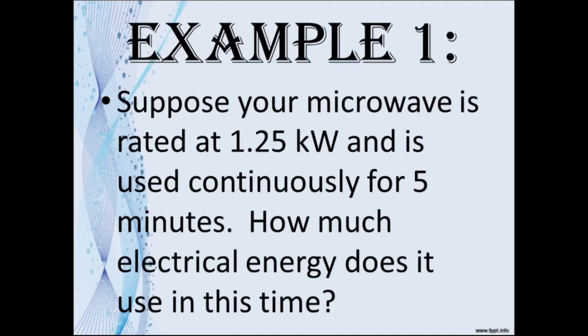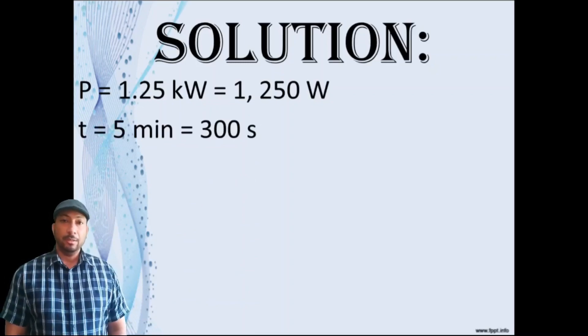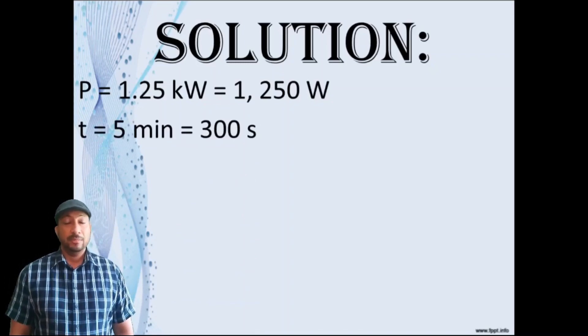Our first example. Suppose your microwave is rated at 1.25 kilowatts and is used continuously for five minutes. How much electrical energy does it use in this time? The power is 1.25 kilowatts, which must be converted to watts, that would be 1250 watts. The time is five minutes, which we must convert to seconds by multiplying by 60. So 5 times 60 gives us 300 seconds.